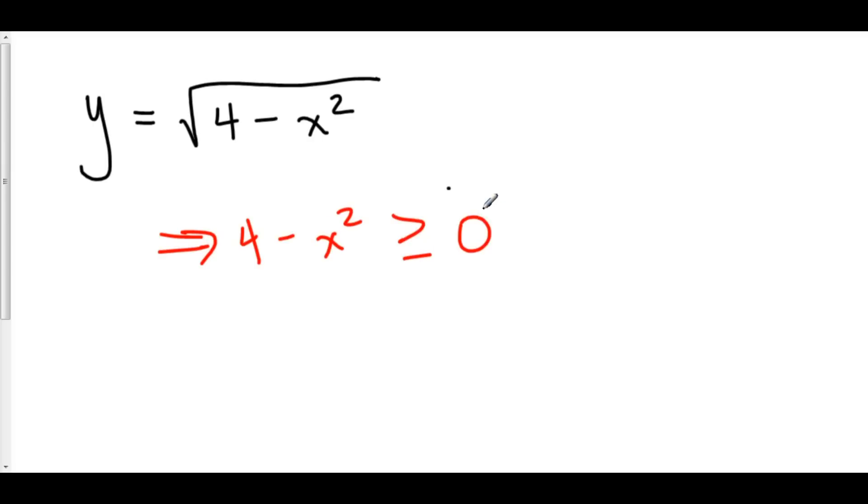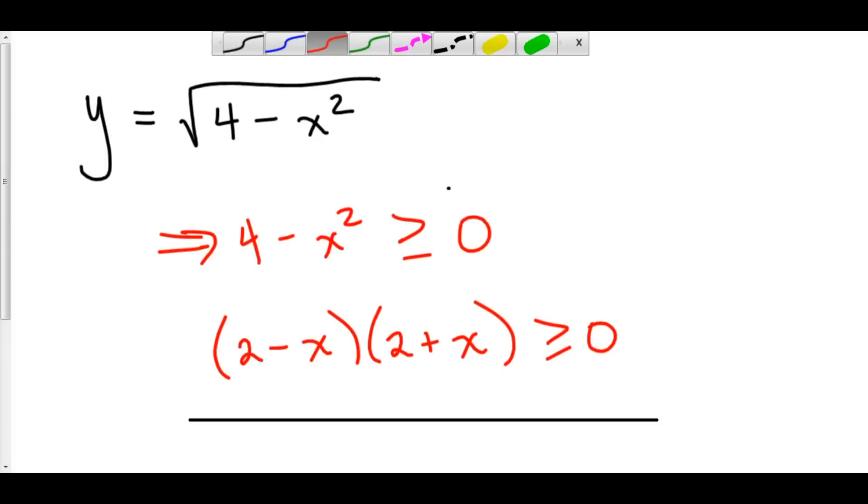Now, let's solve this. Here, we can factor 4 minus x squared as 2 minus x times 2 plus x. And this is greater than or equal to 0. We can make a line analysis here. Here's the graph of y. We have x is equal to negative 2, and x is equal to positive 2. Those are the 0s here. So, y crosses the x-axis at negative 2 and at positive 2.